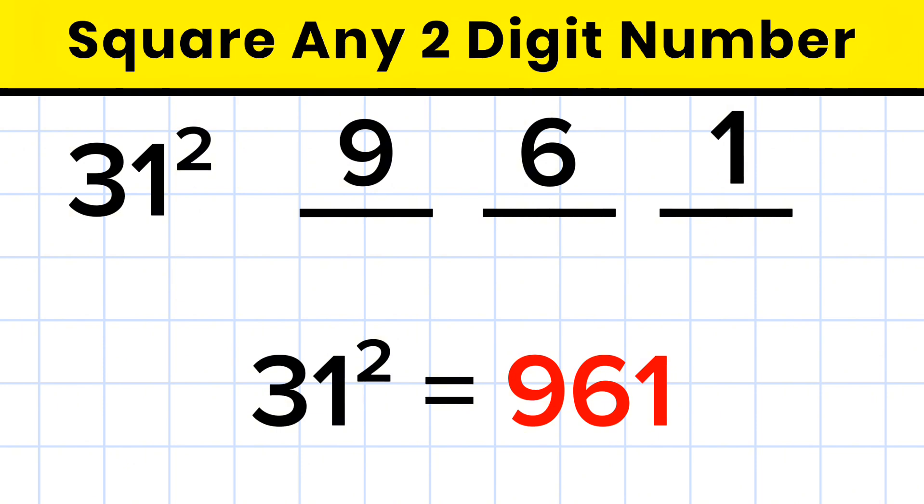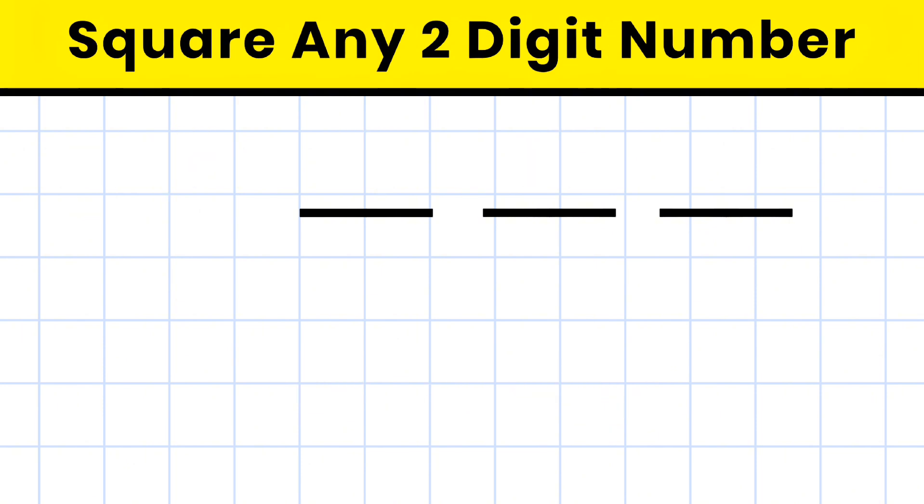Super fast, right? Let's do this one more time with some bigger number. Let's take 42 square. Let's start with 4. So 4 square equals 16.